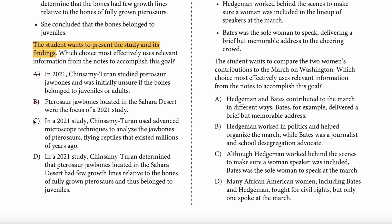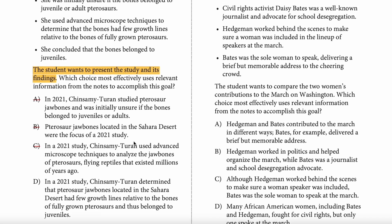So many students are going to read this and ignore the question and just look for factually correct information — and then get confused because all of them are probably factually correct. We've got to present the study and its findings. None of them do it so far. Answer choice D: 'Turan determined that pterosaur jaw bones found in the Sahara Desert had few growth lines relative to the bones of fully grown pterosaurs, and thus belonged to juveniles.' Does answer choice D present the study? Yes! It's the only one that addresses the findings at all. Don't read the notes.